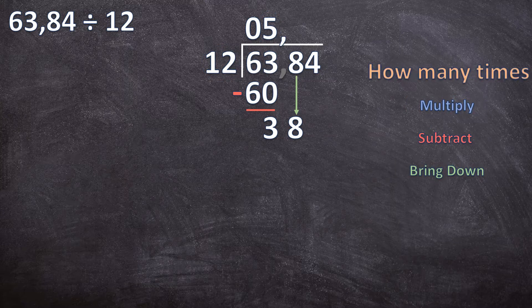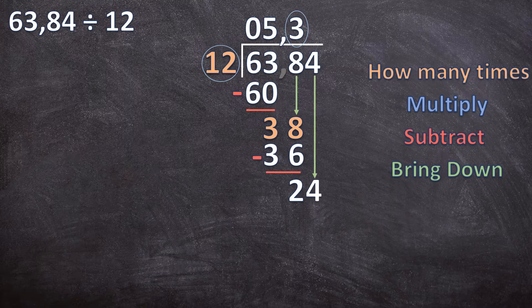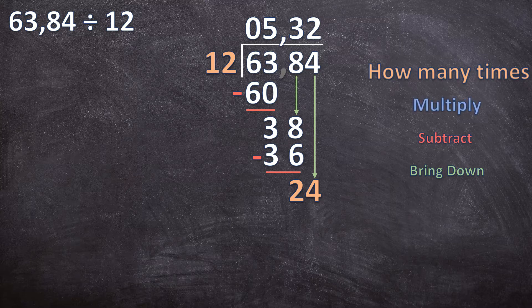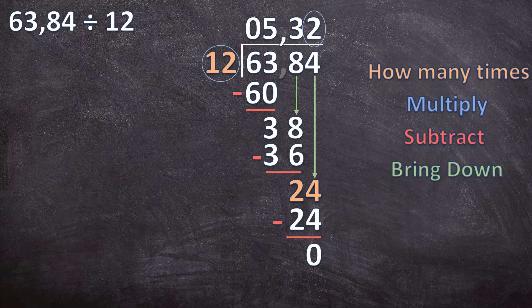Now our four steps start again. How many times can 12 go into 38? Twelve can go three times into 38. We multiply: 3 times 12 is 36. Subtract: 38 minus 36 is 2. Bring the next digit down — that is a 4. How many times can 12 go into 24? Twelve can go two times into 24. Multiply: 2 times 12 is 24. Subtract: 24 minus 24 is zero. Bring down — but there's no digit left, so this is where our long division ends.